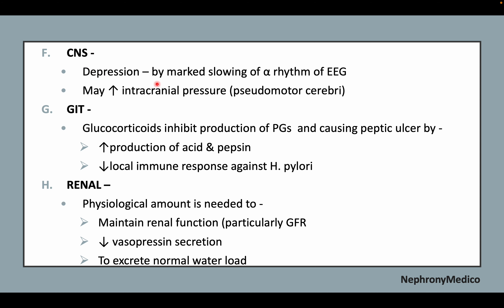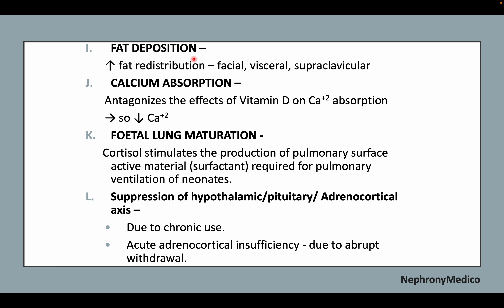On the CNS, glucocorticoids may cause depression and increase intracranial pressure. On the GIT, they increase production of acid and pepsin and reduce local immune response against H. pylori. On the renal system, they maintain renal function and reduce vasopressin secretion. On fat deposition, there is increased fat redistribution. On calcium absorption, there is reduced calcium. Cortisol stimulates production of pulmonary surfactant required for pulmonary ventilation of neonates. Chronic use may suppress the hypothalamic-pituitary-adrenocortical axis, and abrupt withdrawal may cause acute adrenocortical insufficiency.